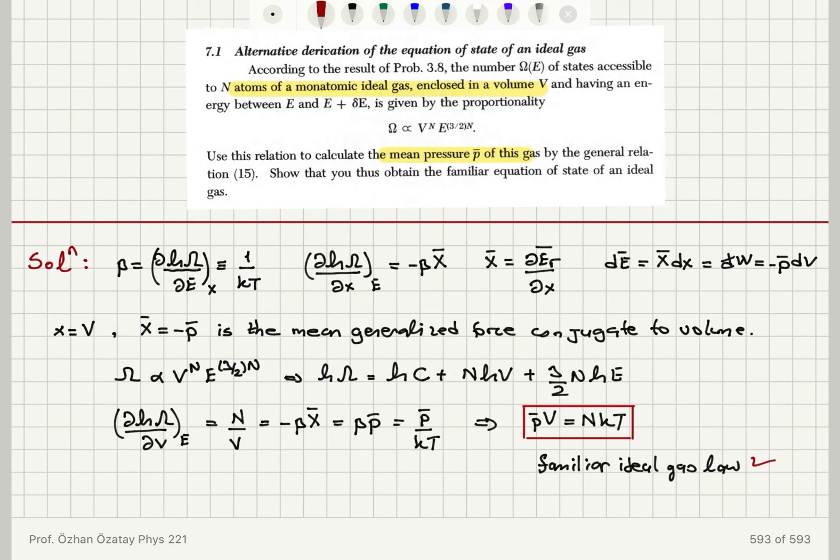So, it is going to be del ln omega del V and that will be equal to N over V using our natural logarithm of omega. This has to be done at constant energy because, remember,